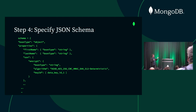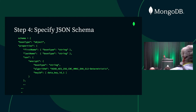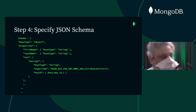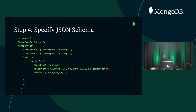Then we specify the JSON schema. The schema defines which fields to encrypt — in this case, the BSON type is an object document, and properties like first name and last name are just string types. For social security number, we use the 'encrypt' keyword, meaning that SSN field will be encrypted. We specify BSON type string, the algorithm — deterministic, which supports equality matches — and the key ID, which is the data key we just created.